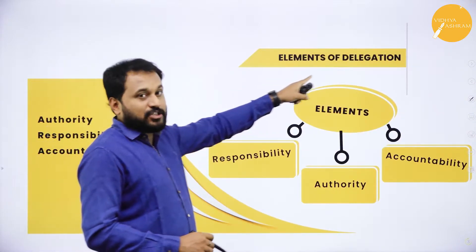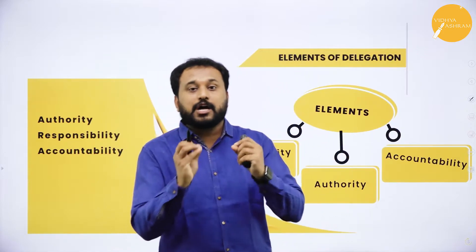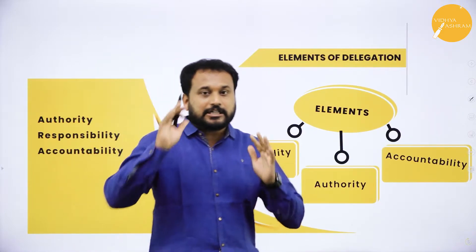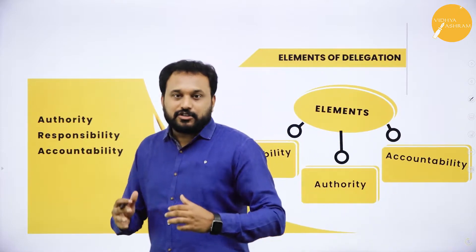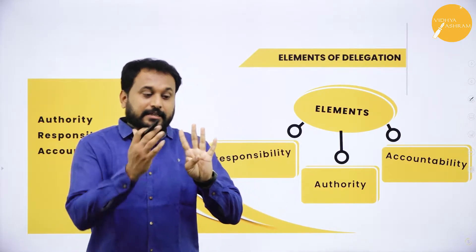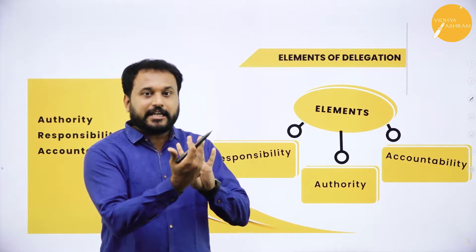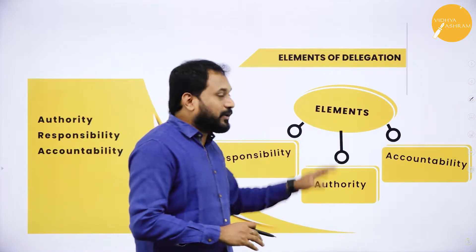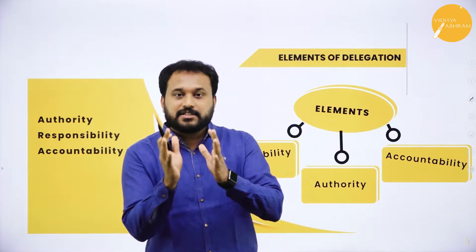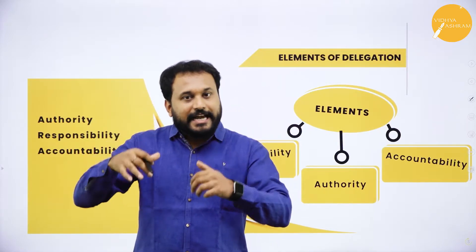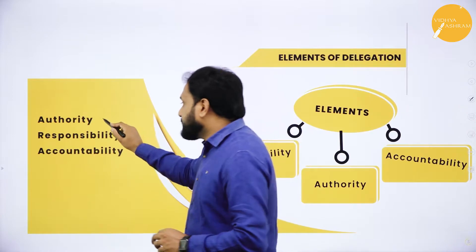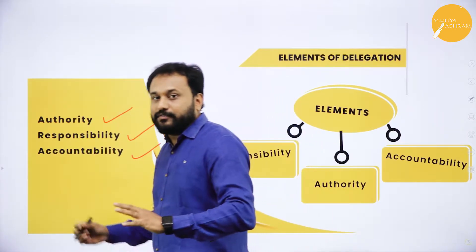Now, elements of delegation — this is a four-mark question. There are three elements of delegation: authority, responsibility, and accountability. If you write the meaning of all three, you get four marks. I'll explain what authority, responsibility, and accountability are, connecting them to the functional and divisional structures from the previous session.